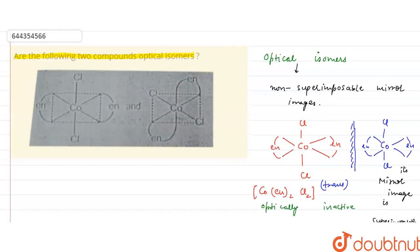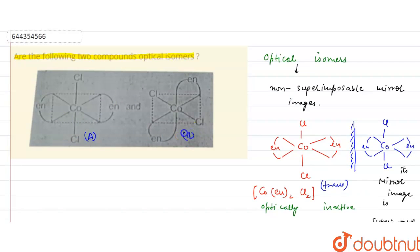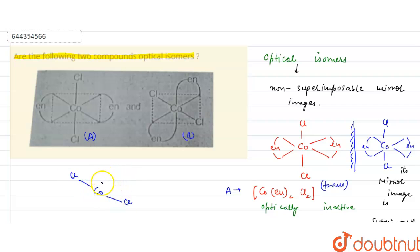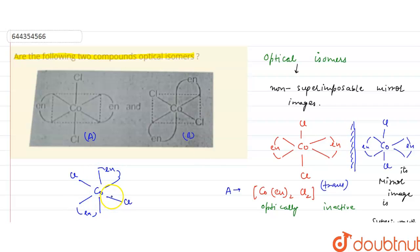Now if we see the other compound that is given — let us name this as compound A and the other as compound B. This is compound A that I have written, and compound B is the other one given.